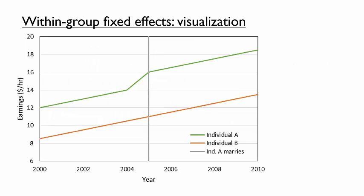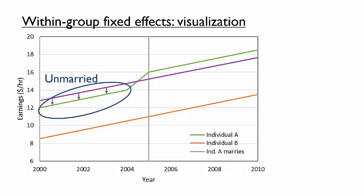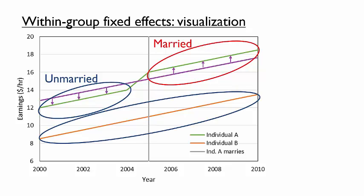Let's visualize the within-group fixed effects regression using the example of the effect of marriage on earnings. We might picture demeaning earnings and controlling for a time trend together. For individual A, the demeaned and detrended earnings would be slightly negative before the individual gets married and slightly positive afterwards. Since the demeaned earnings are higher when the individual is married, the fixed effects model would attribute that within-individual increase in earnings to the effect of getting married. Note that individual B does not get married, nor do his earnings deviate from the time trend, so these observations would not affect the estimate of the effect of marriage on earnings.